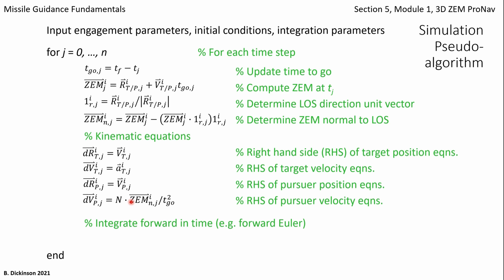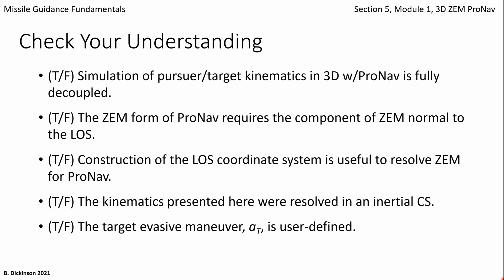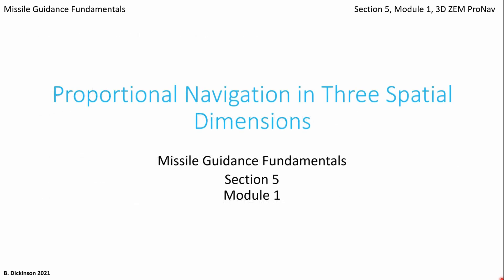For simplicity, we're going to consider a forward Euler where we update the state at time step tj+1 as the current state plus delta t times the right-hand side of the kinematic equations — or times the slopes of the kinematic states with respect to time. The updated state variables update the zero effort miss, and the procedure proceeds until the final time step of the simulation, at which point the results are post-processed. Before proceeding further, pause the video and check your understanding with these true or false questions. In the next module, we will implement what we've developed here to explore three-dimensional engagements.